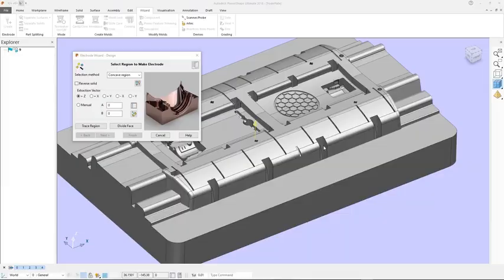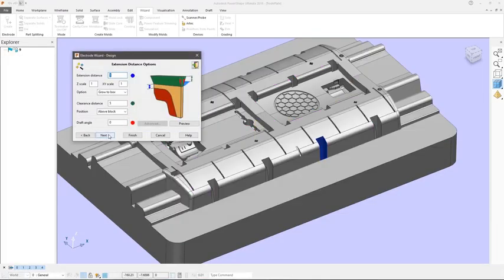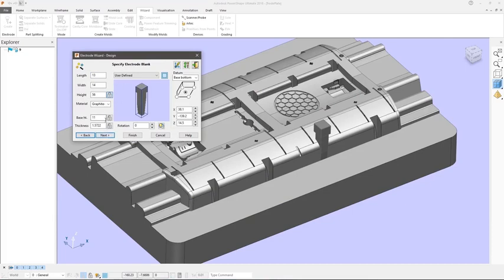To further support the production of molds and dies, PowerShape contains dedicated tools to assist in the design and manufacture of electrodes for electrical discharge machining, or EDM.